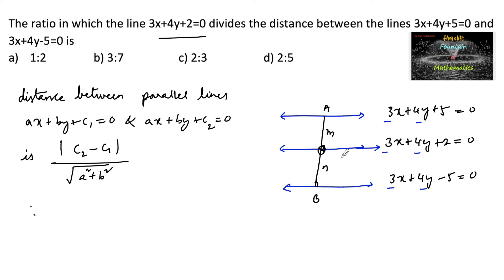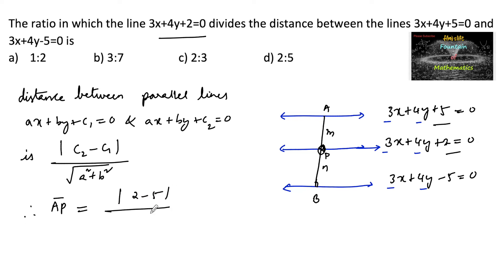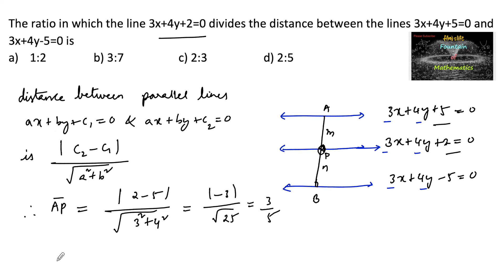Let us consider the dividing point as P. The perpendicular distance AP can be taken as |c2 - c1| / √(a² + b²). Comparing: (2 - 5) / √(3² + 4²) = |-3| / √(9 + 16) = 3/5.